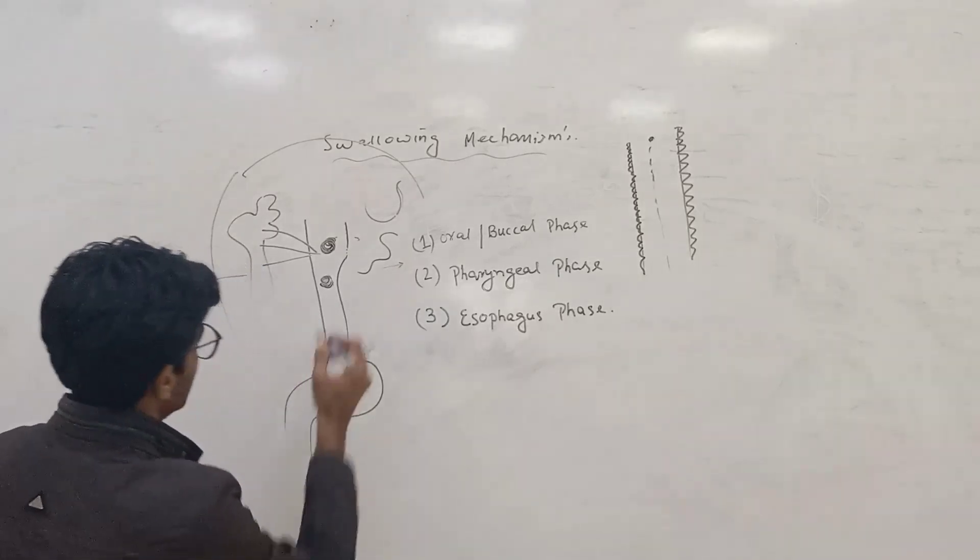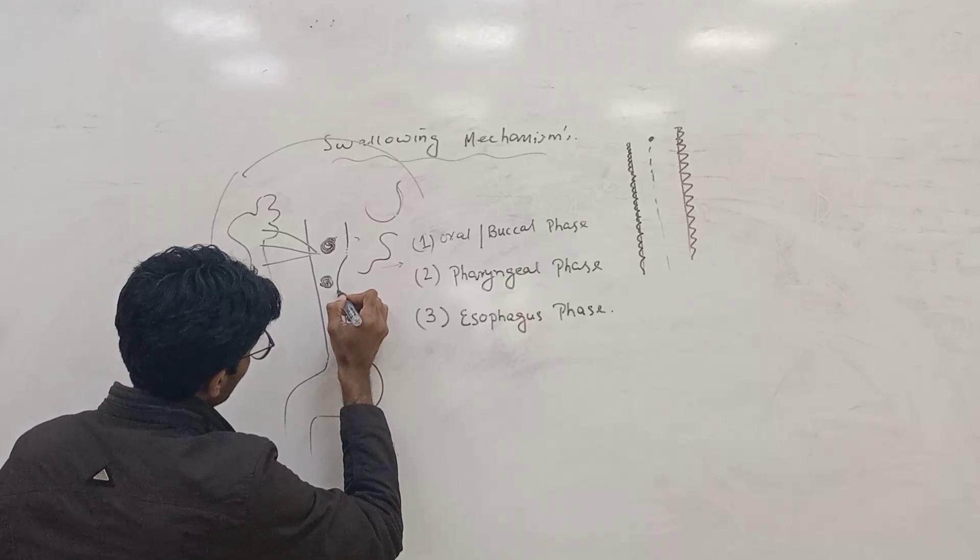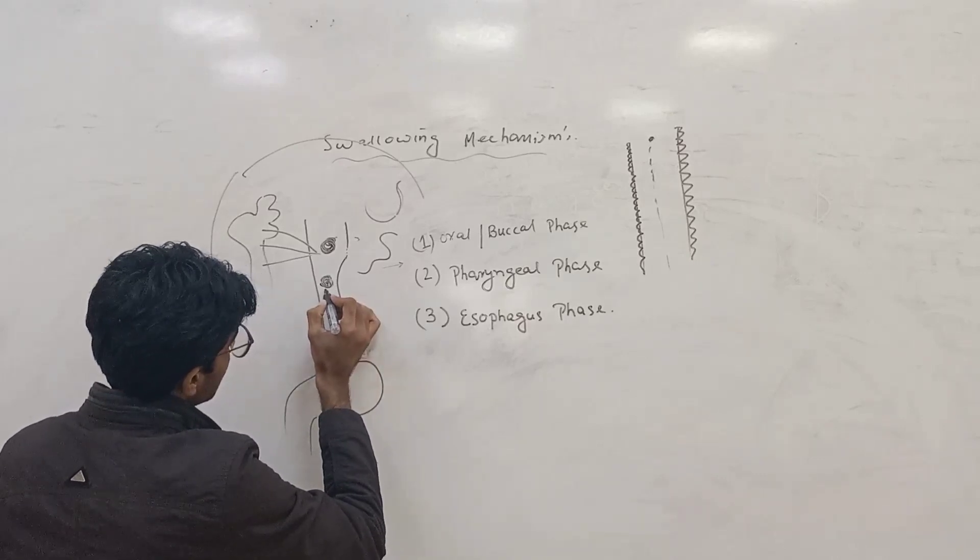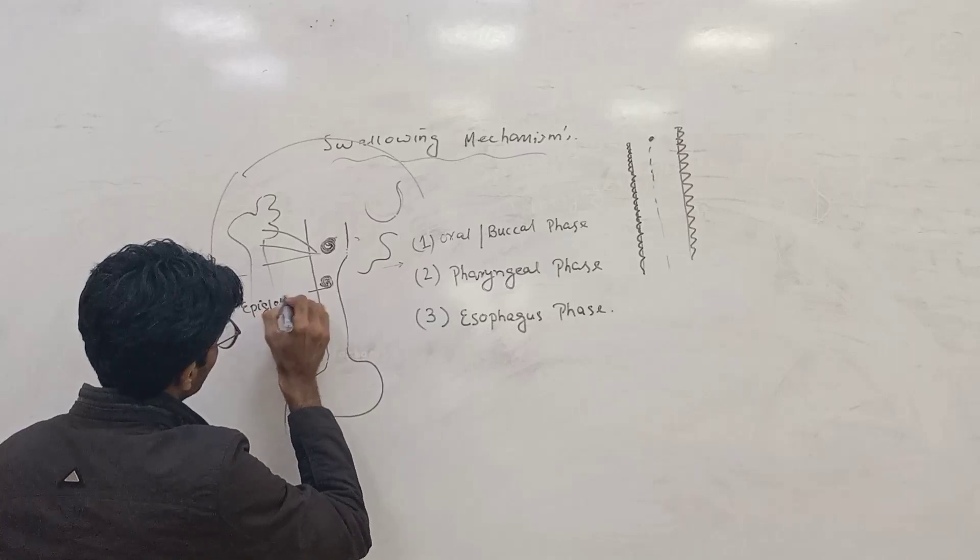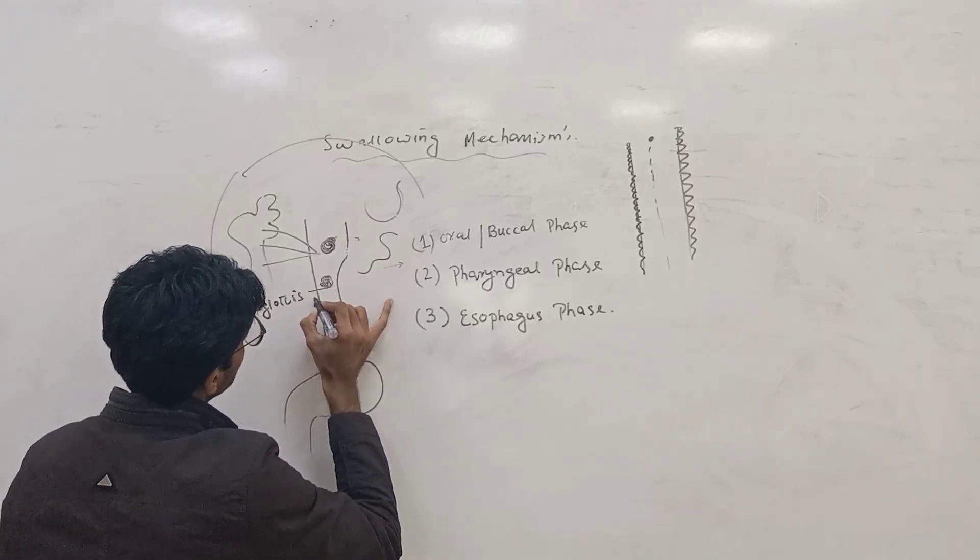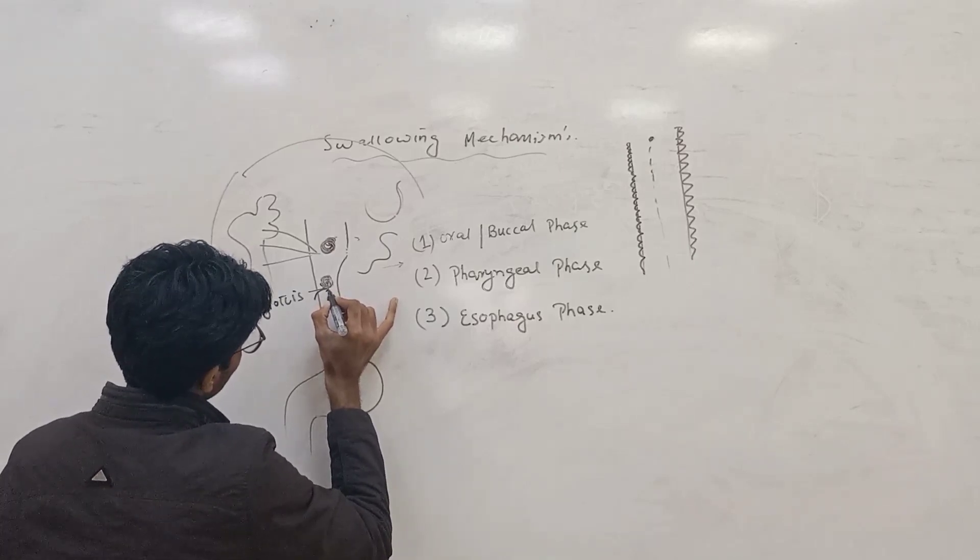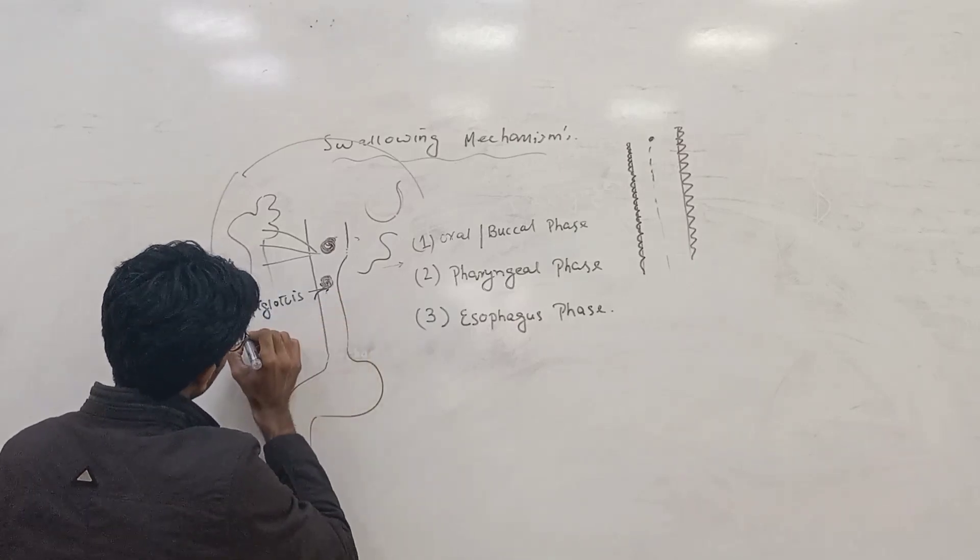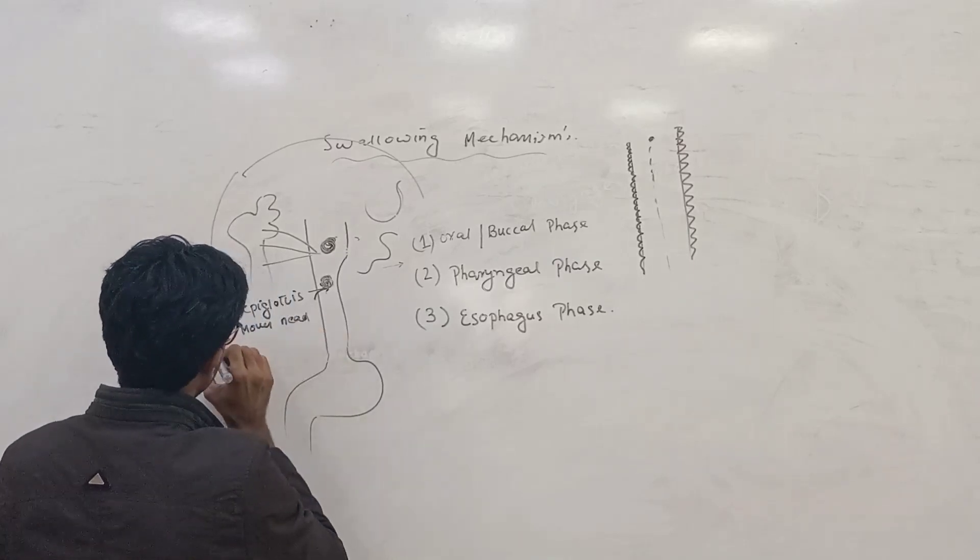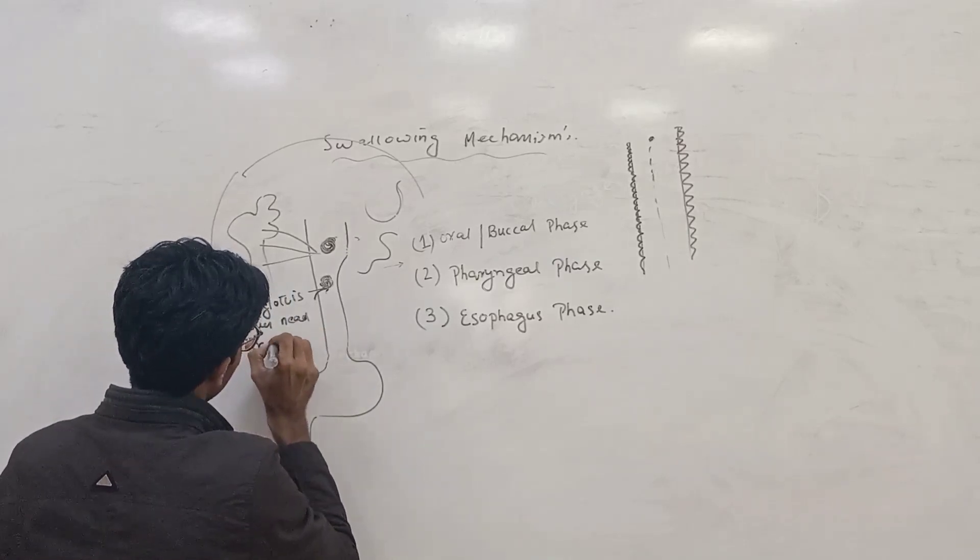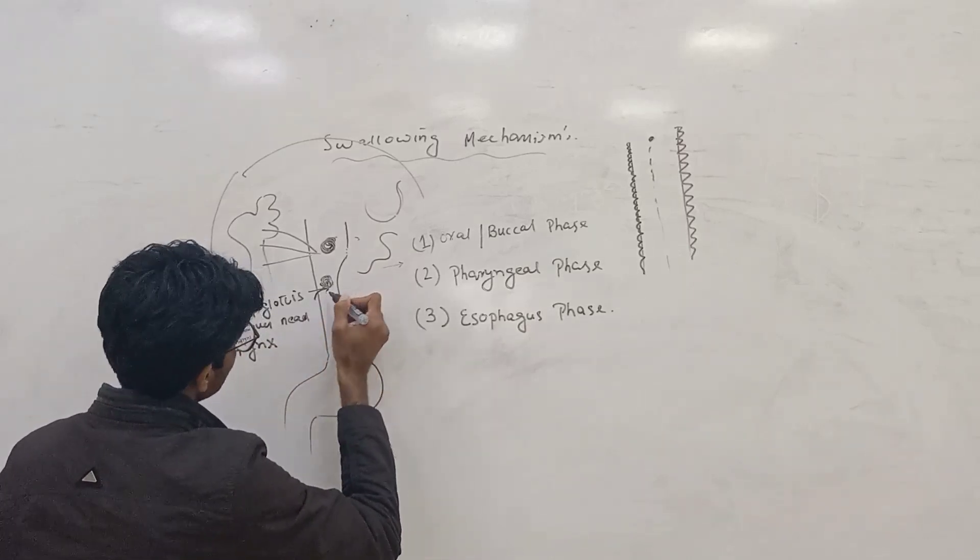Look at how the food transfers into the esophagus region. Near the esophagus, the epiglottis moves downward near the pharyngeal region. When the epiglottis moves down toward the pharynx, the food goes down.